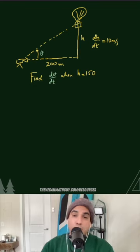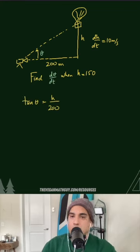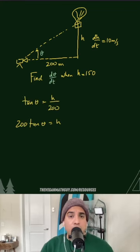Now, all we have to do is create a relationship with theta, the height, and the 200. This is a simple trig relationship. I isolated the h, and I can go ahead and differentiate.